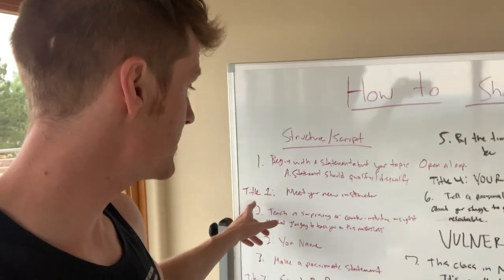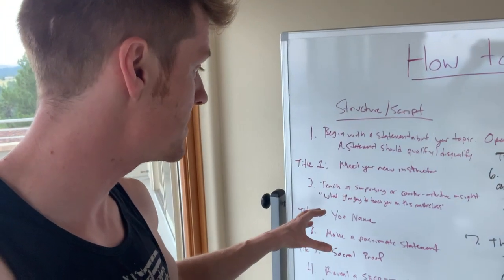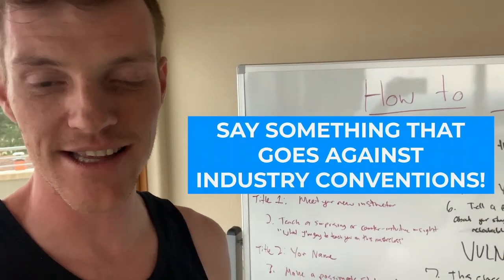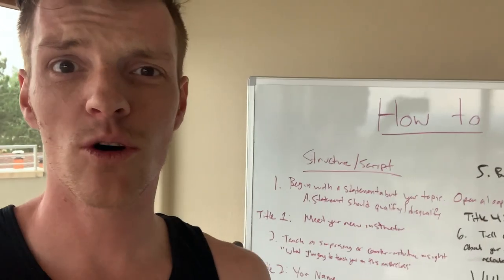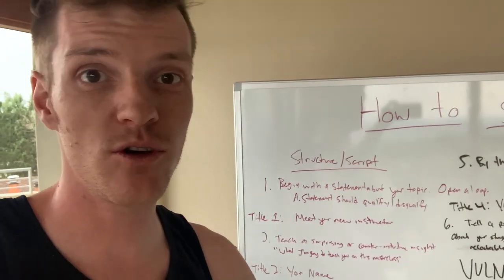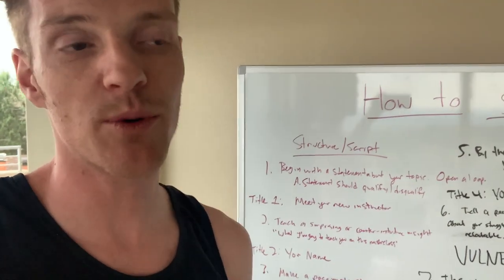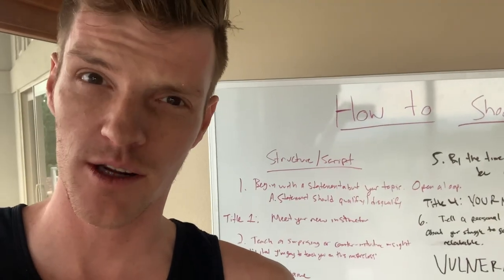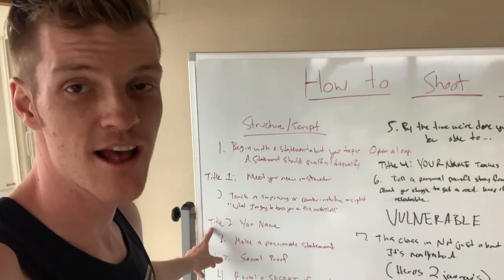After the qualifying statement, include a title card that says 'Meet Your New Instructor' — white text on black background. Then teach a surprising or counterintuitive insight. Say what you're going to teach in this masterclass, then say something that goes against industry conventions. For example, if everyone thinks cold calling is essential, say 'Cold calling is the dumbest thing you could do in real estate.' You want to break their guessing machine and defy their expectations so they keep watching.